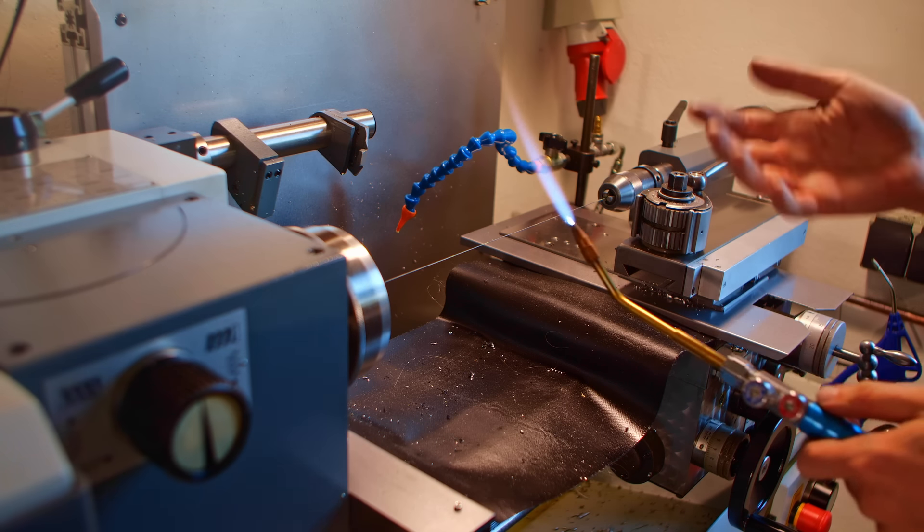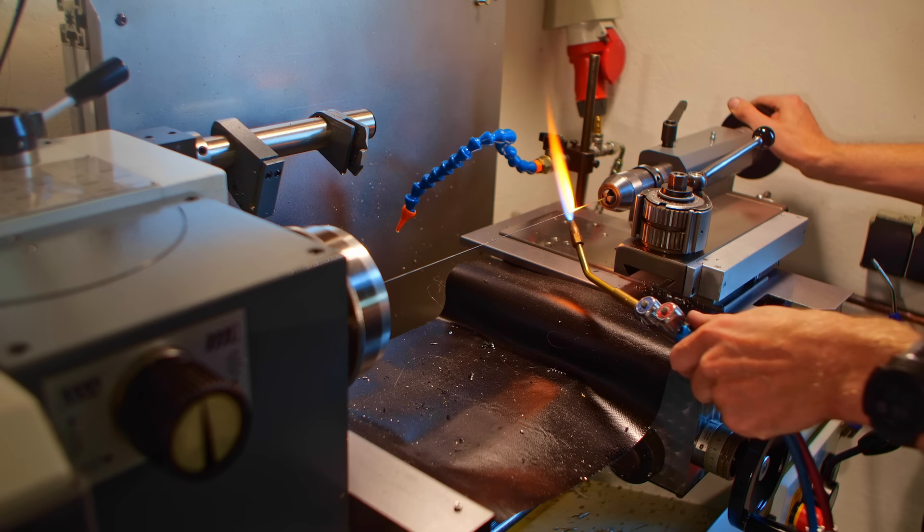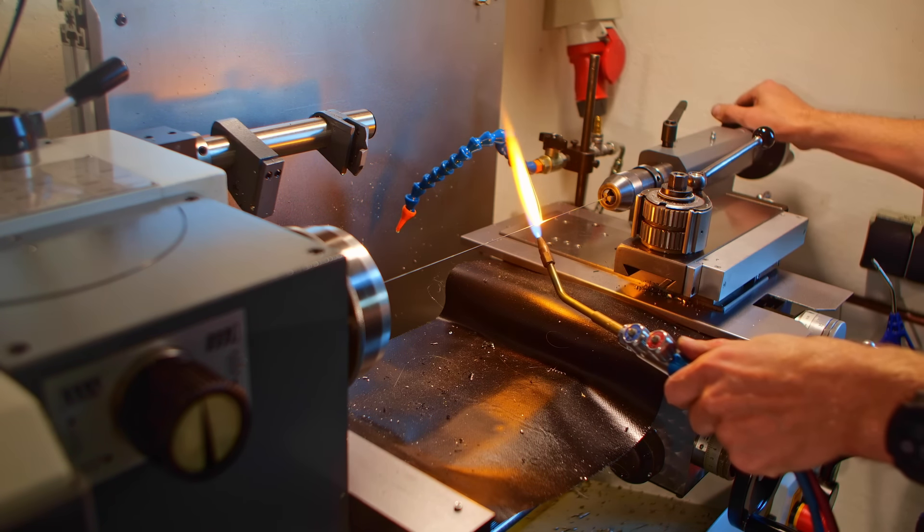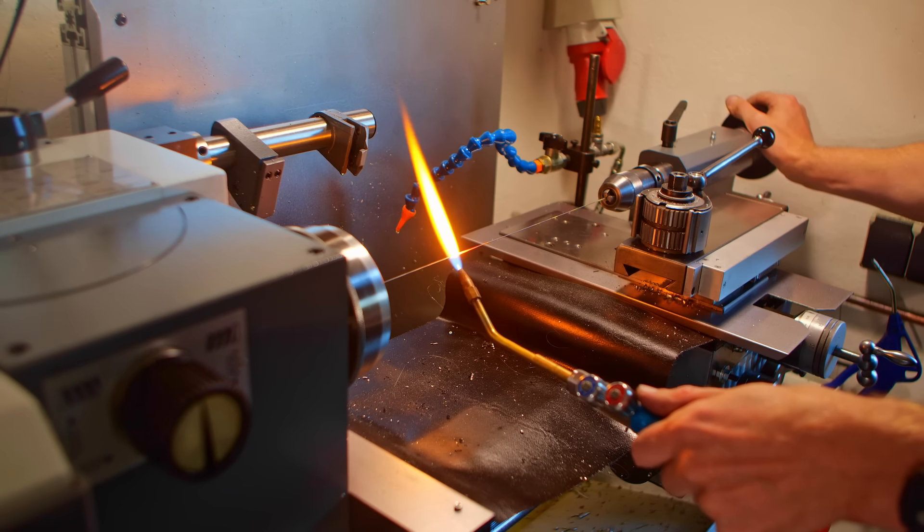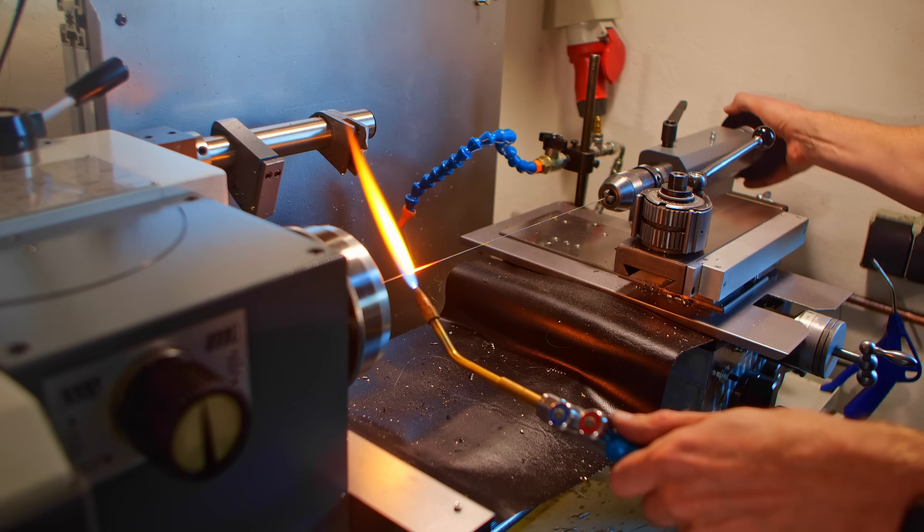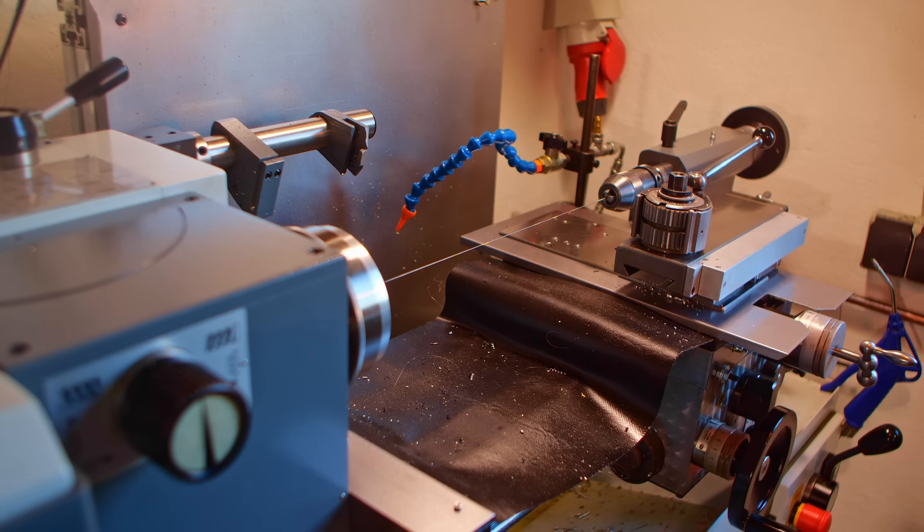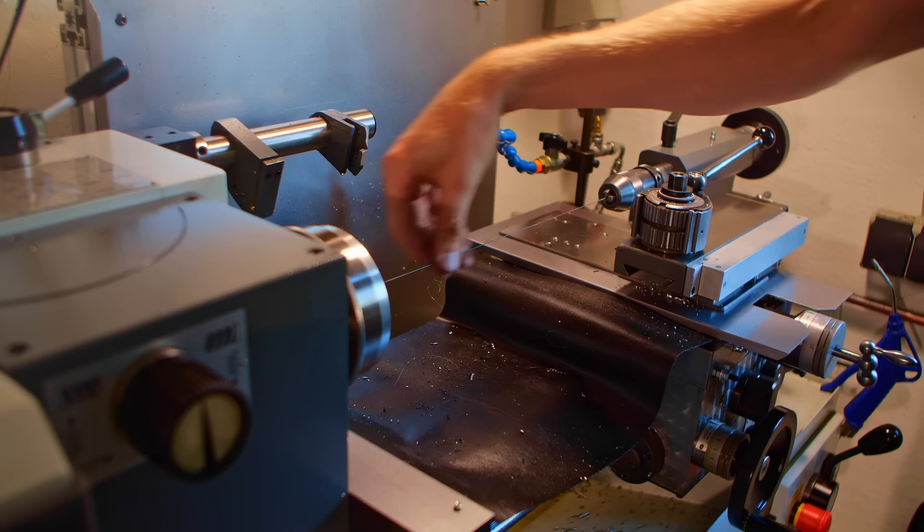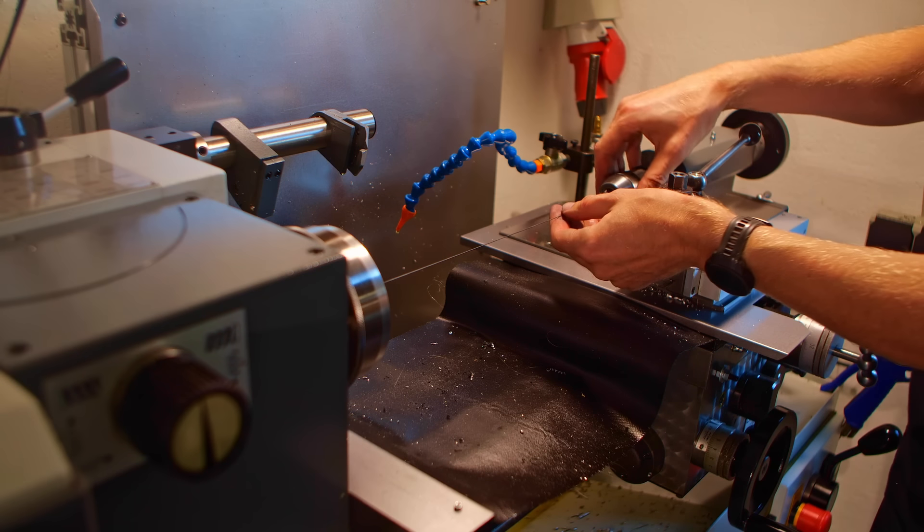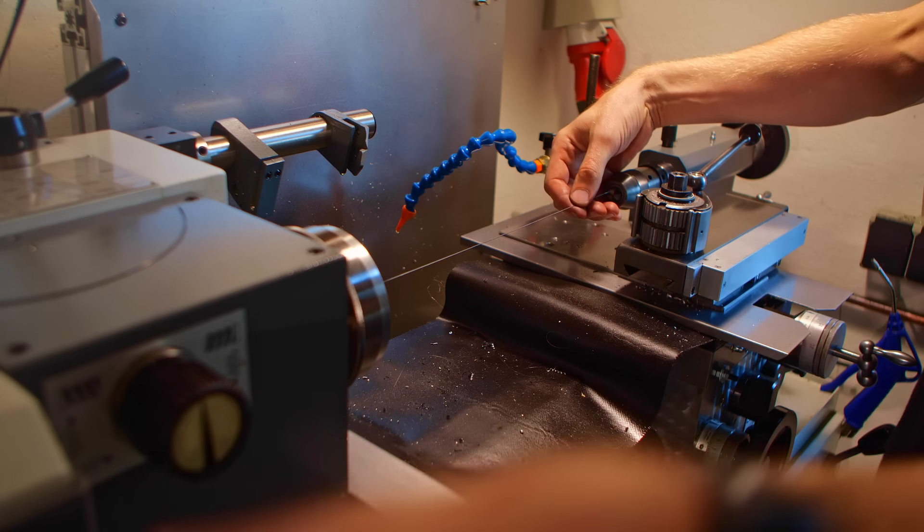And then, from experimentation, I found that I need to do another straightening pass with the tailstock. This is a mixture of stress relieving and adding stress and mechanical straightening. It's all in one package here. Let's see how much shape it has left.